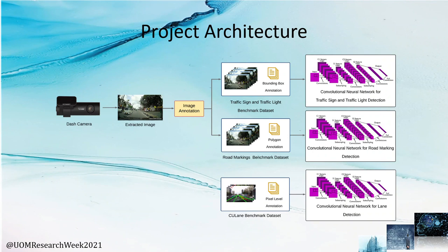Our project architecture is as shown in the diagram. First, a dash camera is used to take straight video footage. Then the frames containing traffic signs, traffic lights, and road markings are extracted from the video. The images are then annotated using image annotation tools and two benchmark datasets — one for traffic signs and traffic lights and another for road markings — are created. These datasets are then used to train two different convolutional neural networks for the detection tasks of traffic signs and traffic lights and road markings.